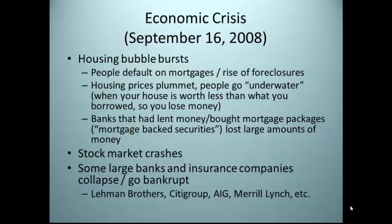As a result of the housing market collapse, the stock market crashed. People didn't believe the economy was strong and believed they needed to save their money and protect themselves. As a result, many who had invested in banks and stock markets saw those investments collapse and go bankrupt. Big firms such as Lehman Brothers, Citigroup, AIG, and Merrill Lynch had invested heavily in these mortgage-backed securities and in the housing market. When all these loans were unable to be repaid, they lost a lot of money and basically went bankrupt.